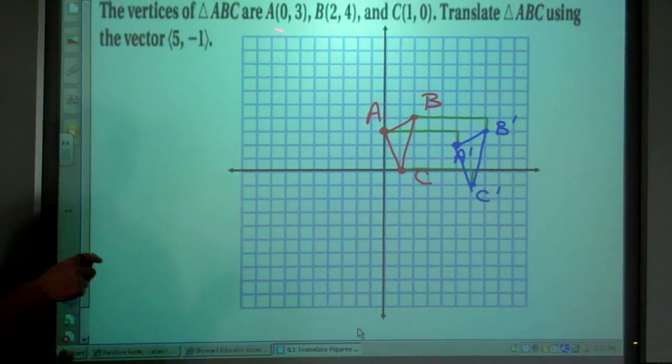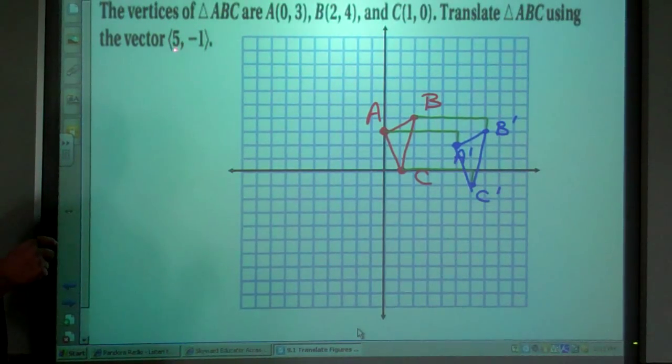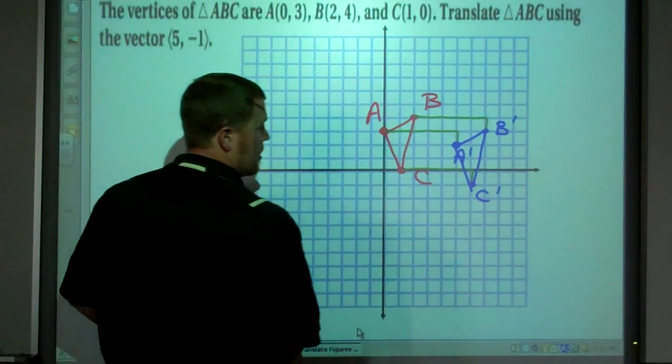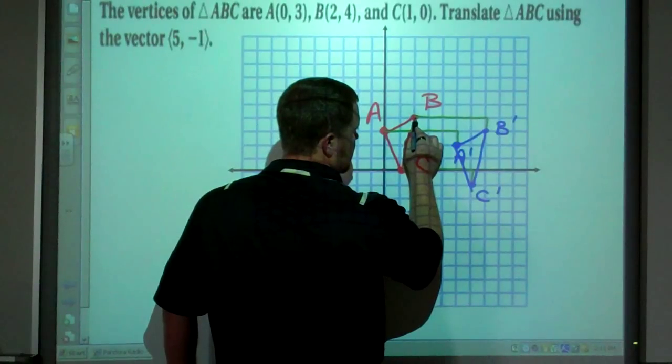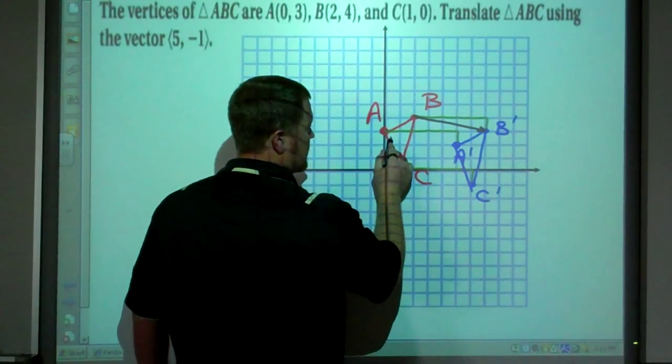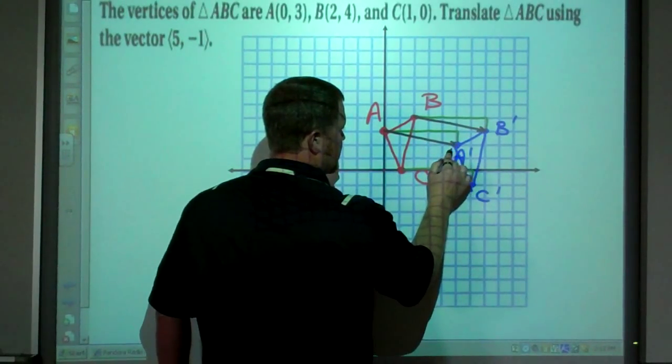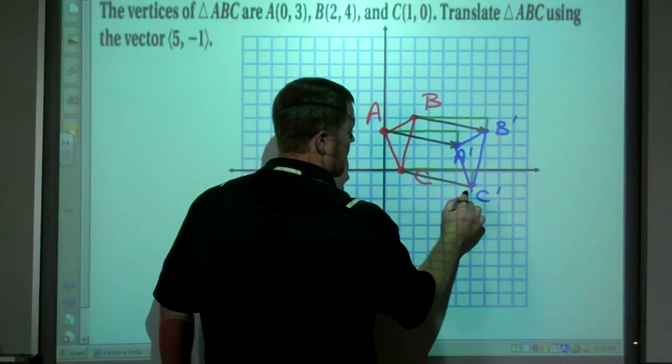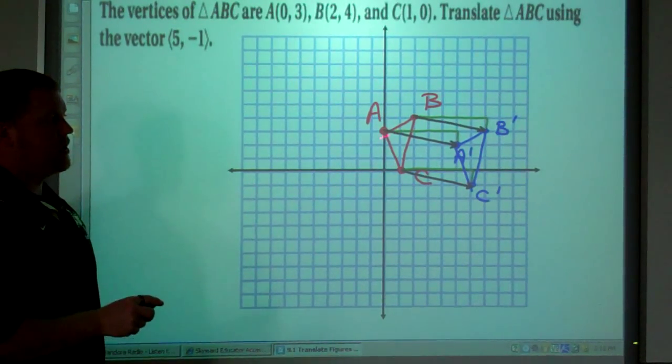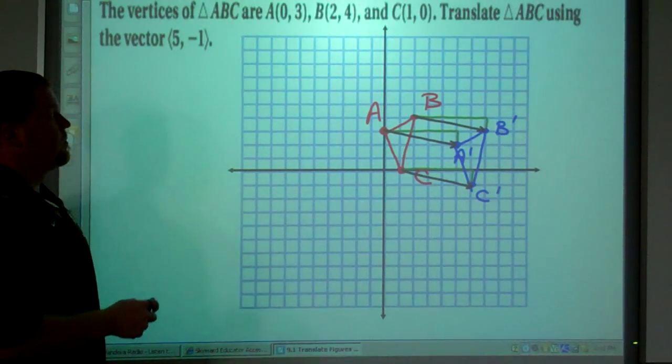I translated triangle ABC by using the vector five, negative one. This is actually the vector that we used in the black. There's the vector. It is the same vector. It has the same direction and the same magnitude for all three points.